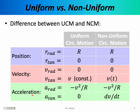The acceleration vector is the most complicated. It has a radial component: for uniform circular motion that is -v²/r, which we proved last time, and for non-uniform circular motion the radial component is again -v²/r. The tangential component is zero for uniform circular motion, but in general it is non-zero for non-uniform circular motion. More generally, the tangential component of acceleration is dv/dt. Since v is constant for uniform circular motion, dv/dt = 0, but for non-uniform circular motion, if v is a function of t, its derivative is not necessarily zero.